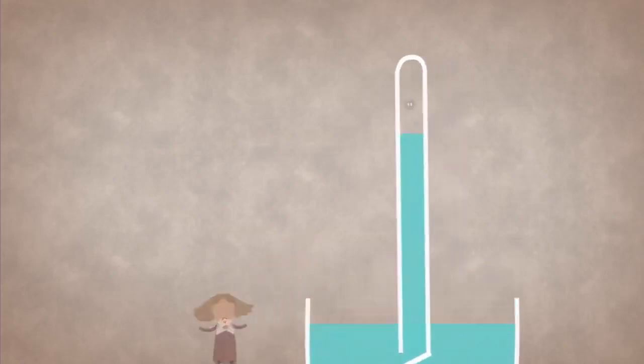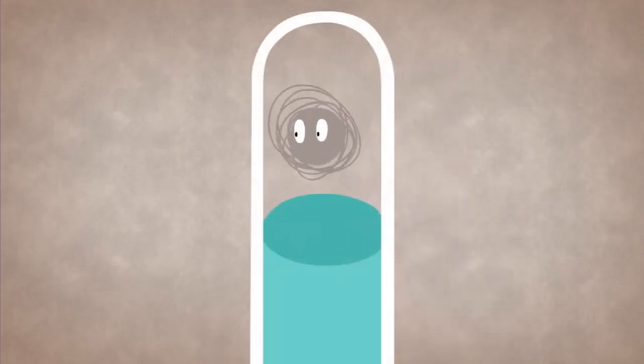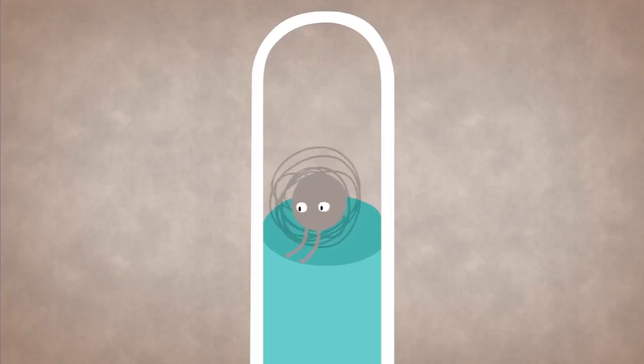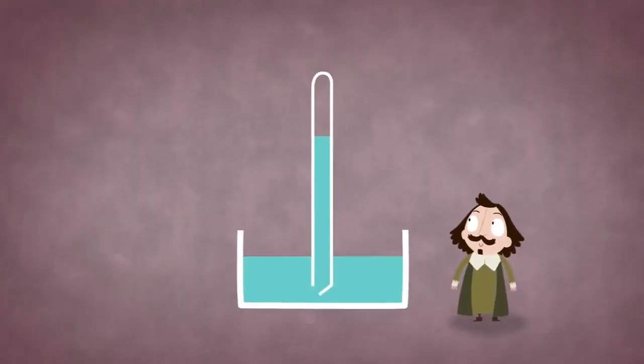But even though the possibility of a vacuum had been demonstrated, not everyone was satisfied with Galileo's idea that this empty void was exerting some mysterious yet finite force on the water. Evangelista Torricelli, Galileo's young pupil and friend, decided to look at the problem from a different angle.